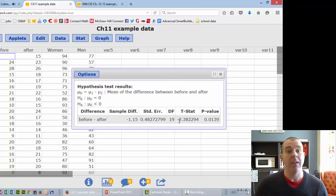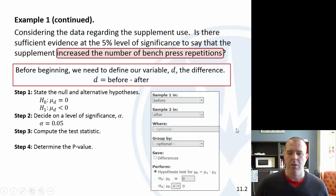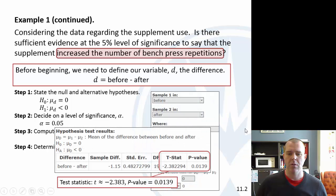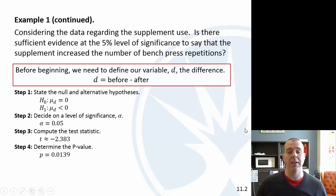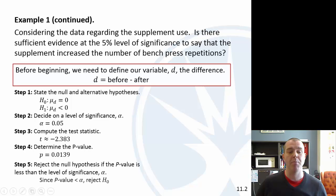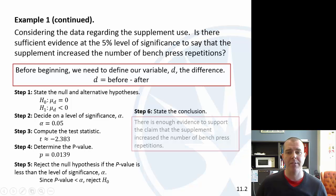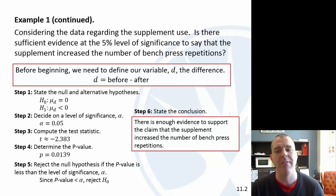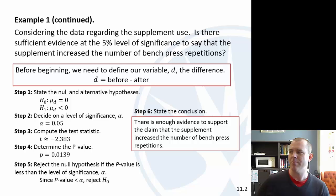There's my t-stat. It is a negative t-stat, that's good. The p-value is pretty small. It is less than our level of significance. So when we do our steps, we would reject the null hypothesis, and there is enough evidence to support the claim that this supplement increased the number of bench press repetitions. You kind of get the flow of these hypothesis tests. What's different here is that first step where we're setting up the difference.